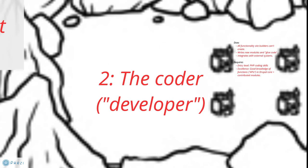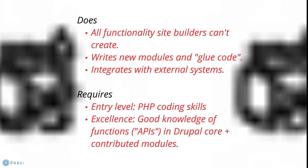The second role is the Coder, or what's usually called the Developer. If you meet someone who says they're a developer, it means this person creates all the functionality on the site that site builders cannot create. When you reach the end of the premade modules, you call in your coder and she writes new modules and what's called glue code — small pieces of code that help existing modules talk to each other. They also integrate with external systems, work with databases, and migrate data.